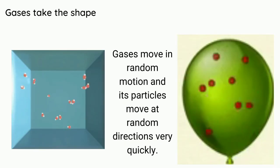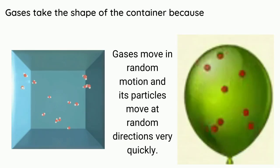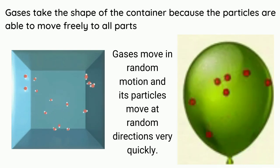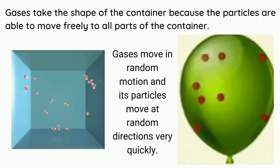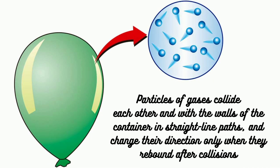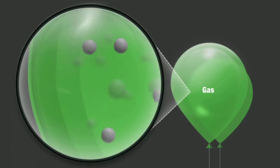Gases take the shape of the container because the particles are able to move freely to all parts of the container. Gases move in random motion and its particles move at random directions very quickly. Particles of gases collide with each other and with the walls of the container in straight-line paths, and change their direction only when they rebound after collisions.